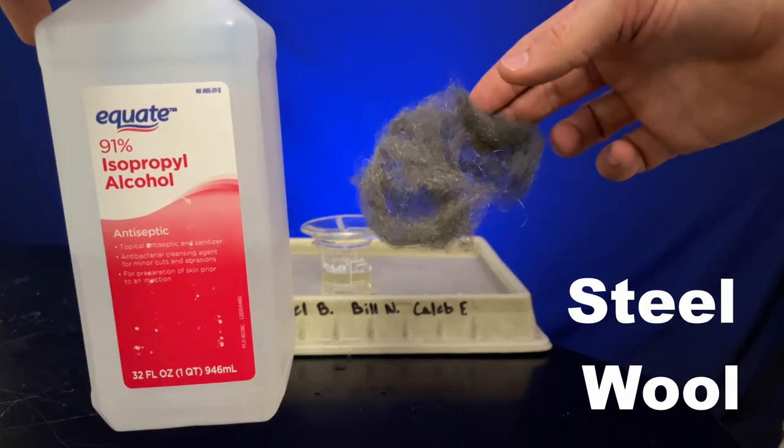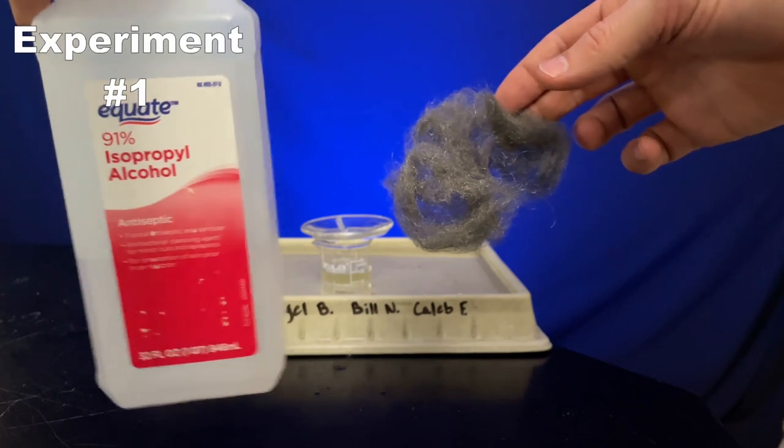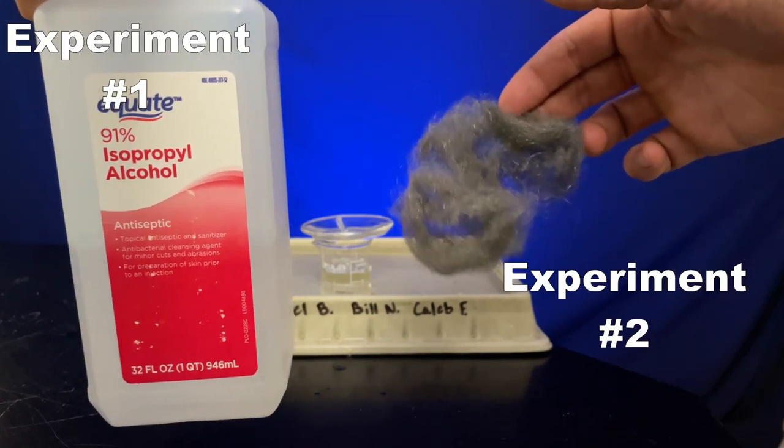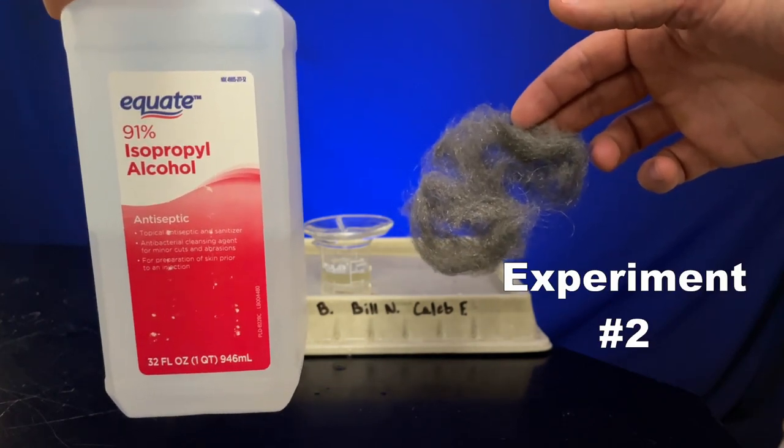The second experiment will use steel wool. Try to figure out the chemical and experimental differences between experiment one with the alcohol and experiment two with the steel wool.